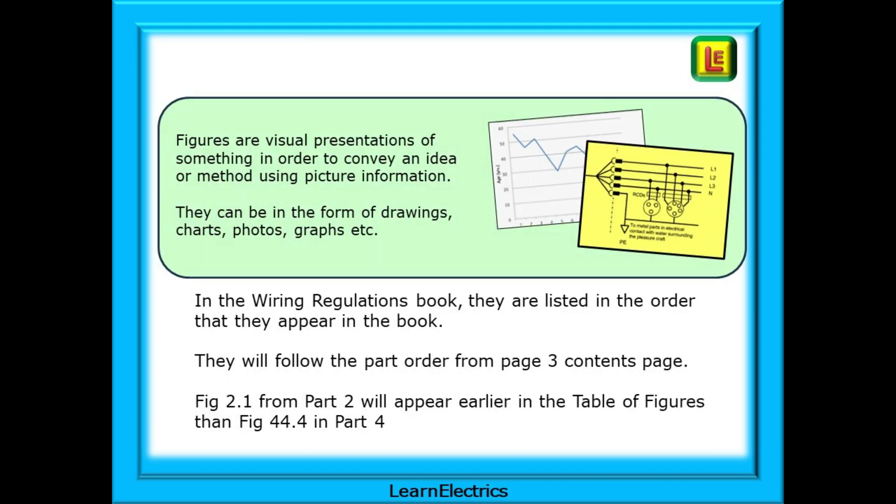Figures are visual presentations of something used in order to convey an idea or method using picture information. They can be in the form of drawings, charts, graphs, etc. In the wiring regulations book, they are listed strictly in the order that they appear in the book. They will follow the part order from the page 3 contents page. Figure 2.1 from part 2 will appear earlier in the table of figures than figure 44.4 in part 4.